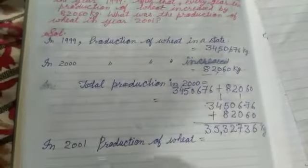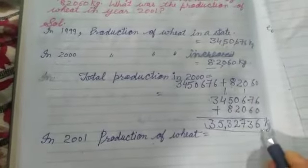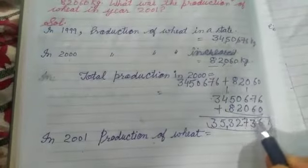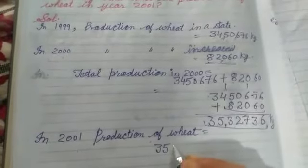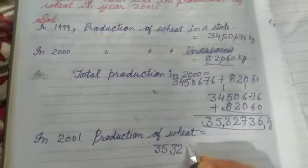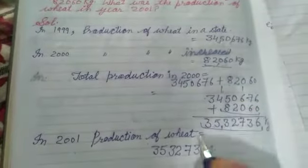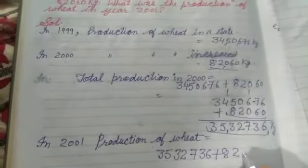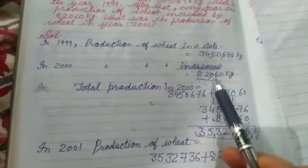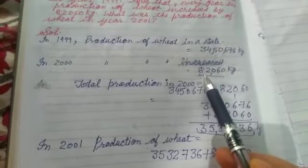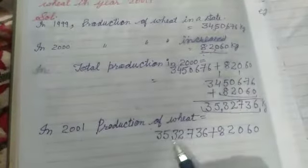Humne batana hai ki 2000 mein jo gehun ki production hui, vo kitni hui? Toh is mein hum jo total production jo increase ho rahi hai, isko hum plus karenge. Toh 35,03,736 mein hum plus karenge 82,060. Kyunki hamein bataya gaya hai ki har saal 1999 ke baad gehun ki production 82,060 badh rahi hai. Toh isko hum plus karenge.